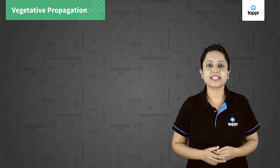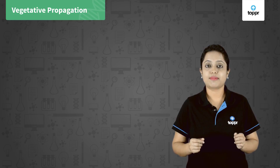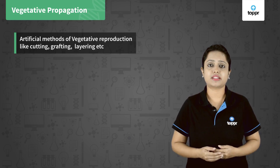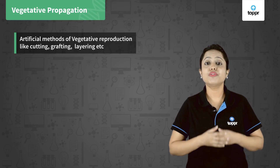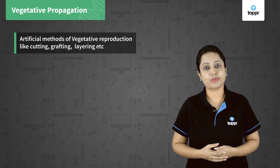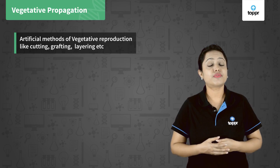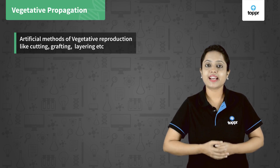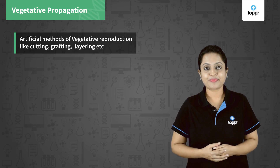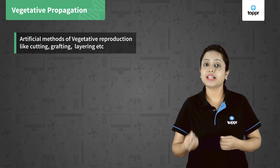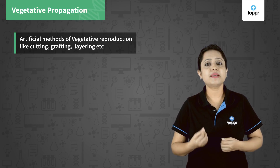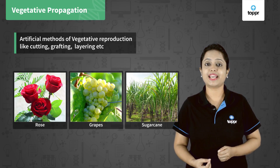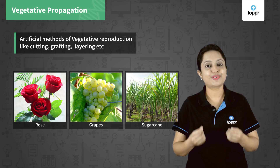Nowadays, many farmers and gardeners use artificial methods of vegetative propagation like cutting, grafting, and layering. By these methods, many plants like rose, grapes, and sugarcane are grown.